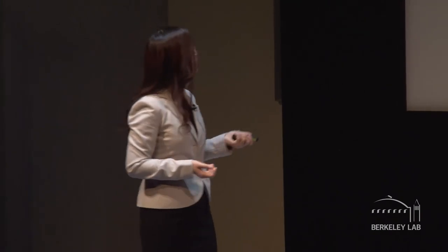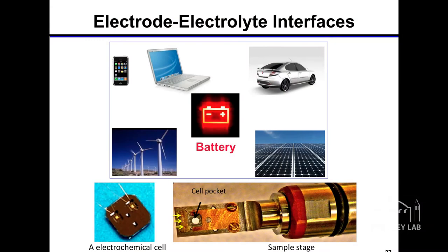Using the liquid cell, we can also address questions in real-world issues such as batteries. We can make a small battery cell by putting electrodes inside a liquid cell. Then we can monitor the electrode-electrolyte interfaces during charge and discharge using a transmission electron microscope — and we can see how the battery works and, mostly, how it fails.